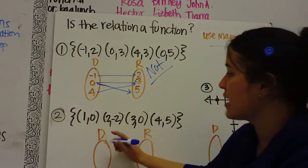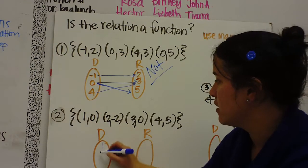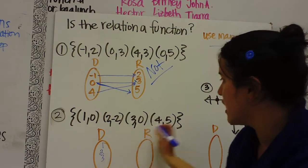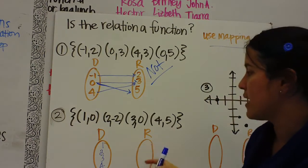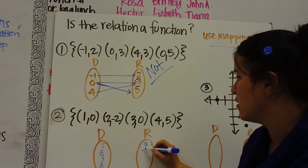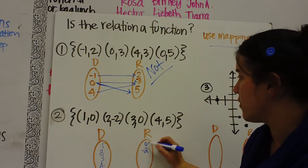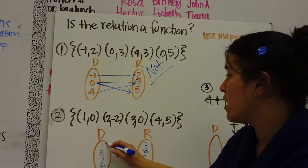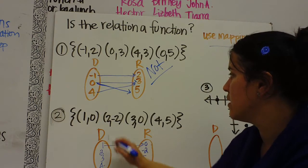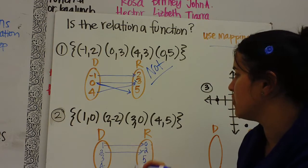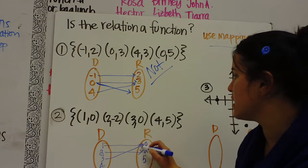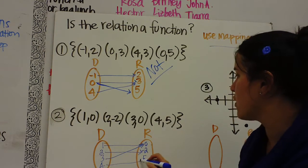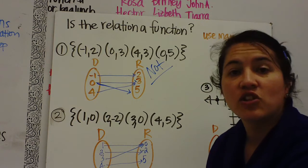Let's do number 2. I'm going to write down my domains. 1, 2, 3, 4. I'm going to write down my ranges. 0, negative 2, 0 again, and 5. I map 1 to 0, 2 to negative 2, 3 to 0, and 4 to 5. So we look at it.